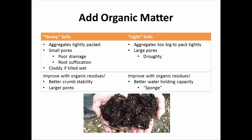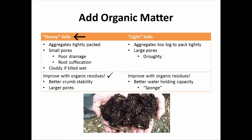Heavy soils and light soils — heavy soils we associate with high clay content. The aggregates are tightly packed with small pores, which leads to poor drainage and problems with root growth. They're called heavy because when they're wet, they're really difficult to till. If we add organic matter to a heavy soil, we can improve the soil structure, get better soil crumb stability, and introduce larger pore spaces, which can help with aeration and drainage.